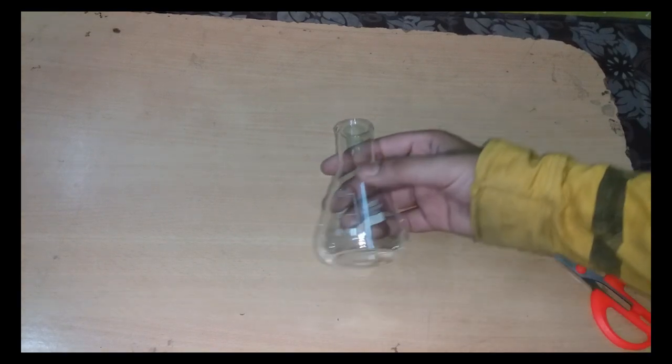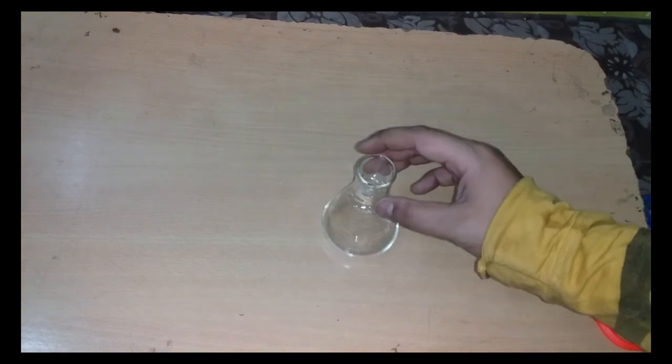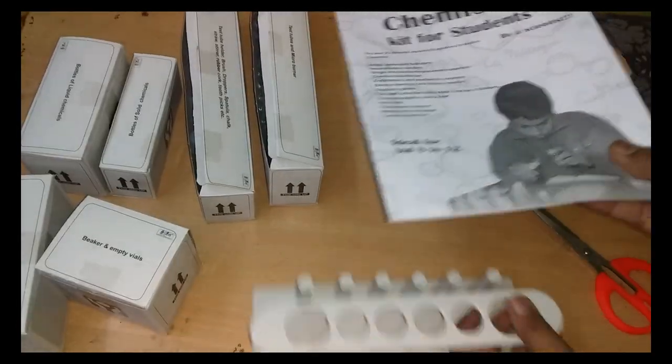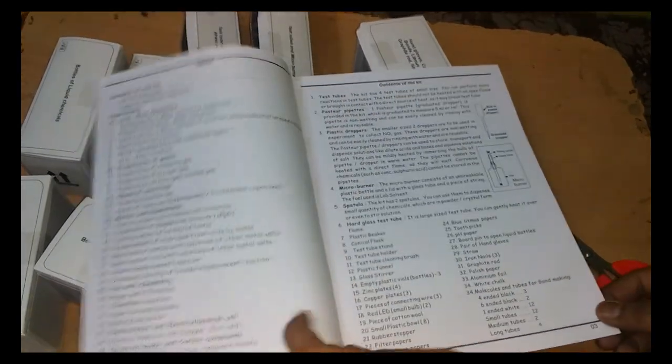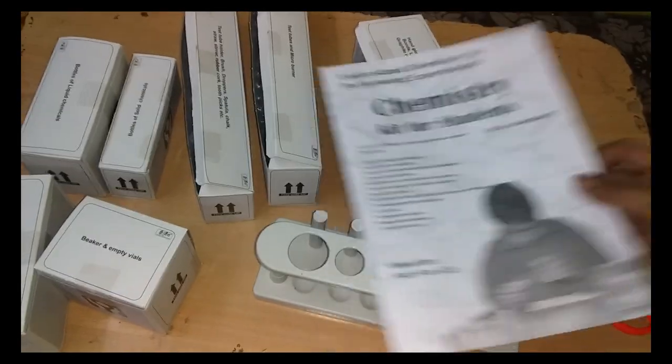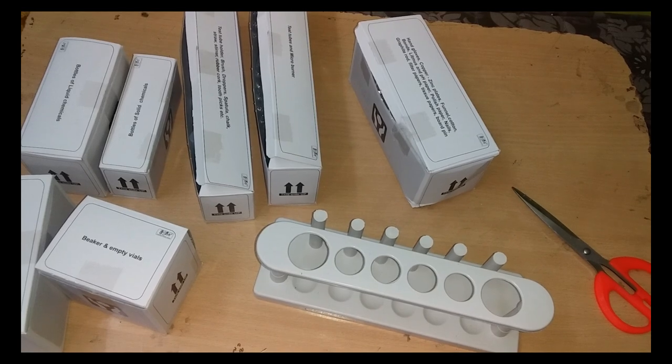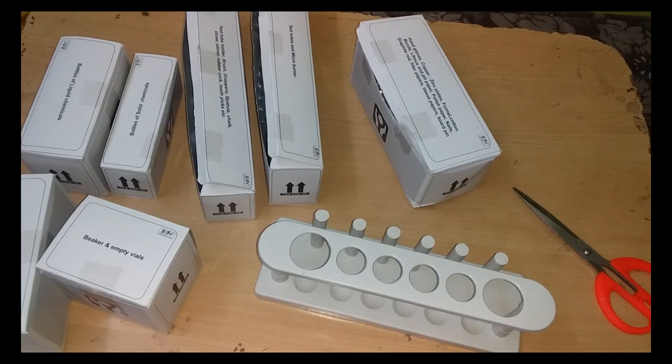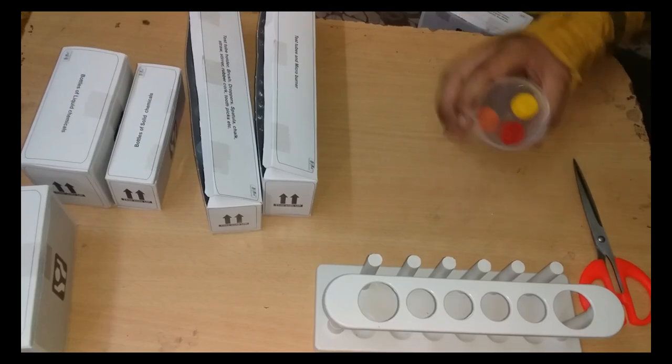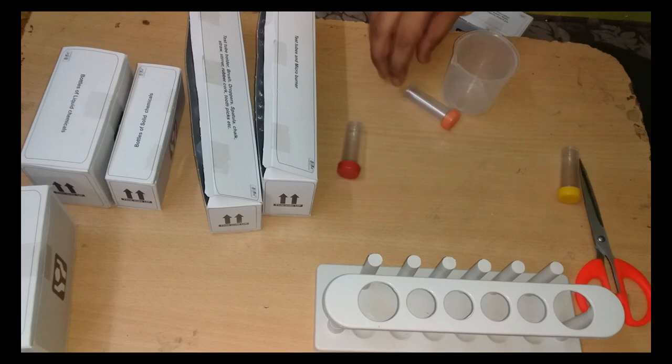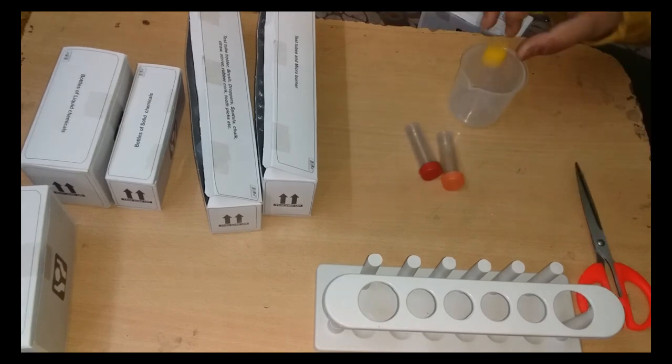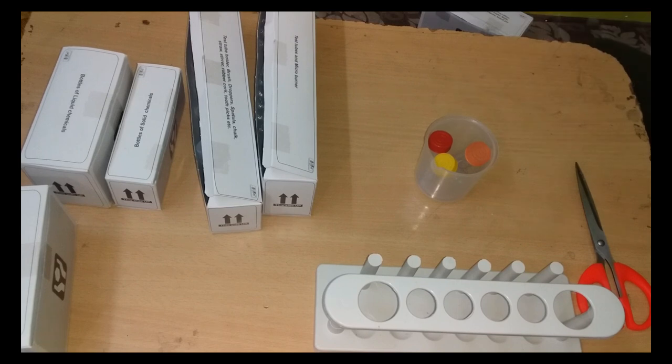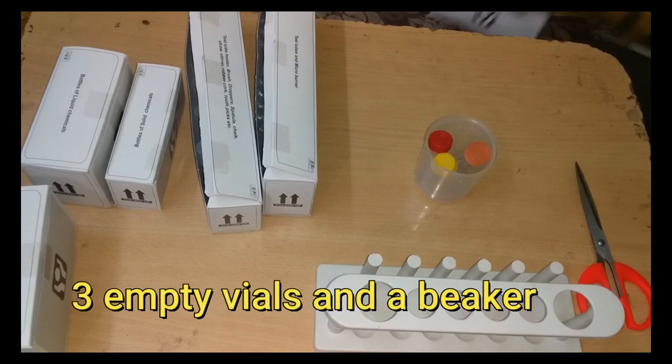This is a 100 ml flask. Now I spent some time cutting all the packets with a bazillion experiments written over it. That's all the packages on the table. This is a plastic beaker with three vials - empty plastic bottles, three empty vials and a beaker.